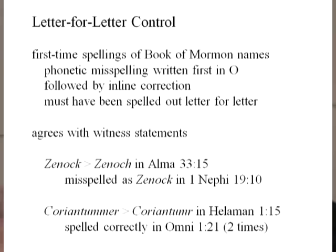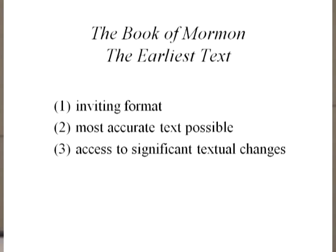This is what I've been trying to do in the Yale edition: provide an inviting format for both LDS and non-LDS readers, make the most accurate text possible, and have significant textual variants listed at the back. When you look at this text and its word-for-word transmission, it's very clear to me that it was a revealed text given to Joseph Smith word for word. When it's said that it's a marvelous work and a wonder, it is my belief that indeed it is precisely that. Thank you.